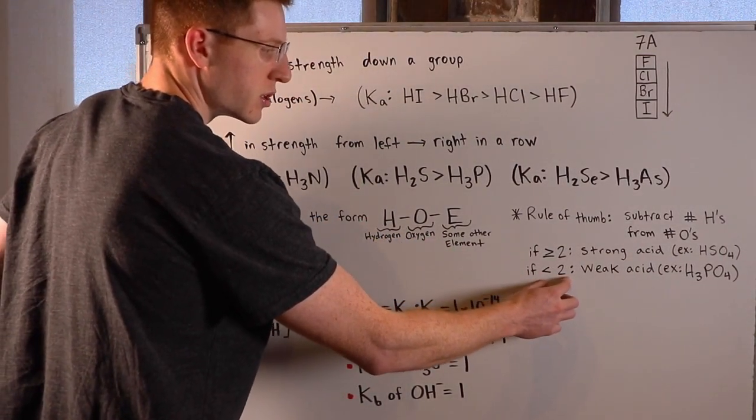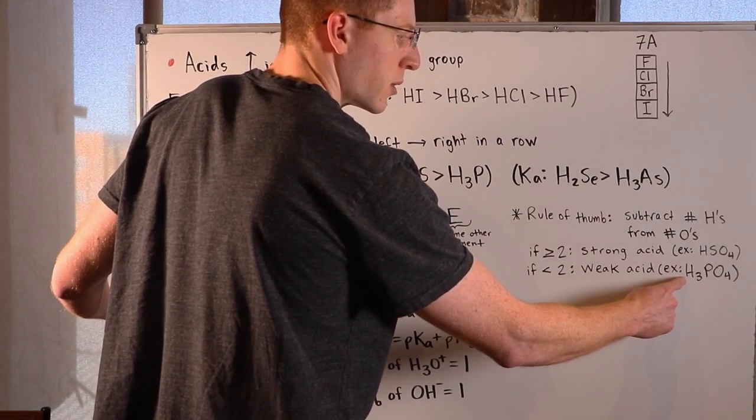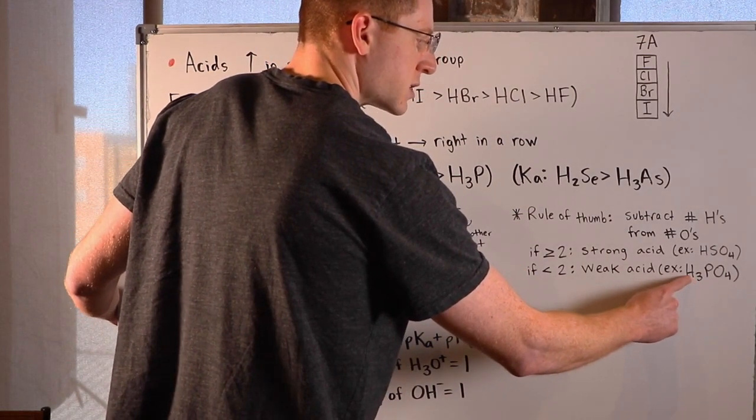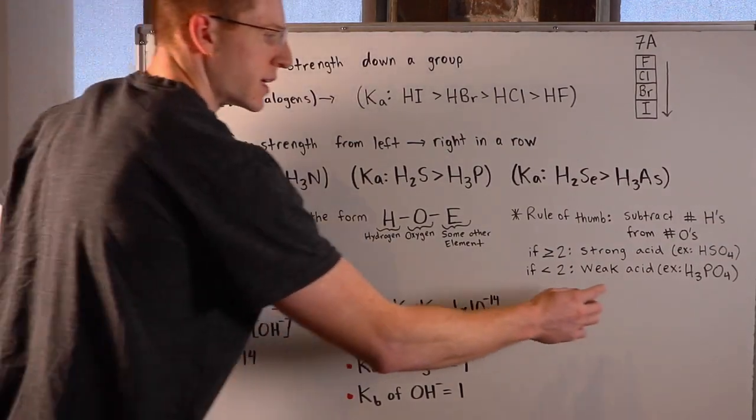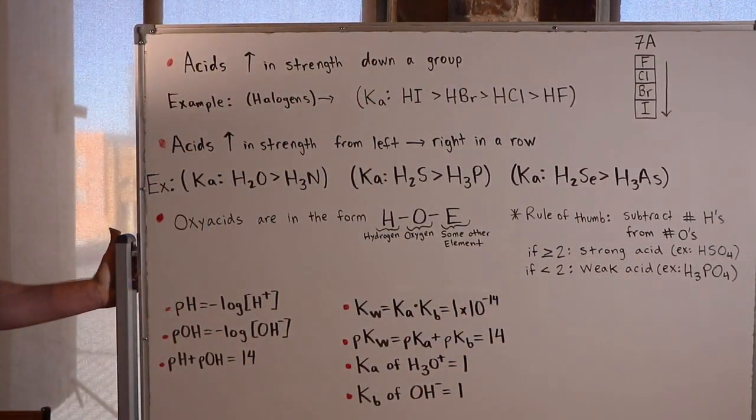However, if I get a number less than 2, it's a weak acid. For example, H3PO4. If I subtract 3 hydrogens from 4 oxygens, I get 1. So H3PO4 is a weak acid.